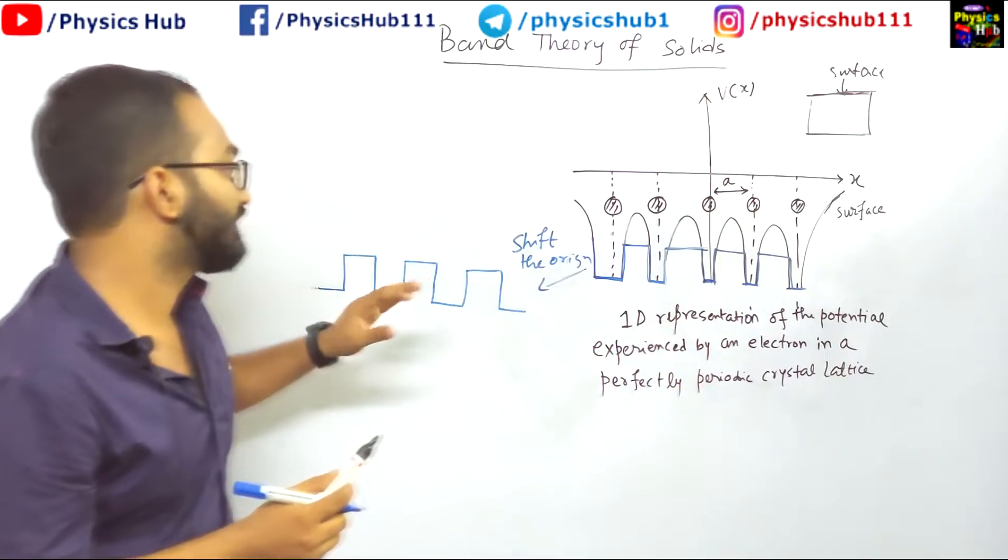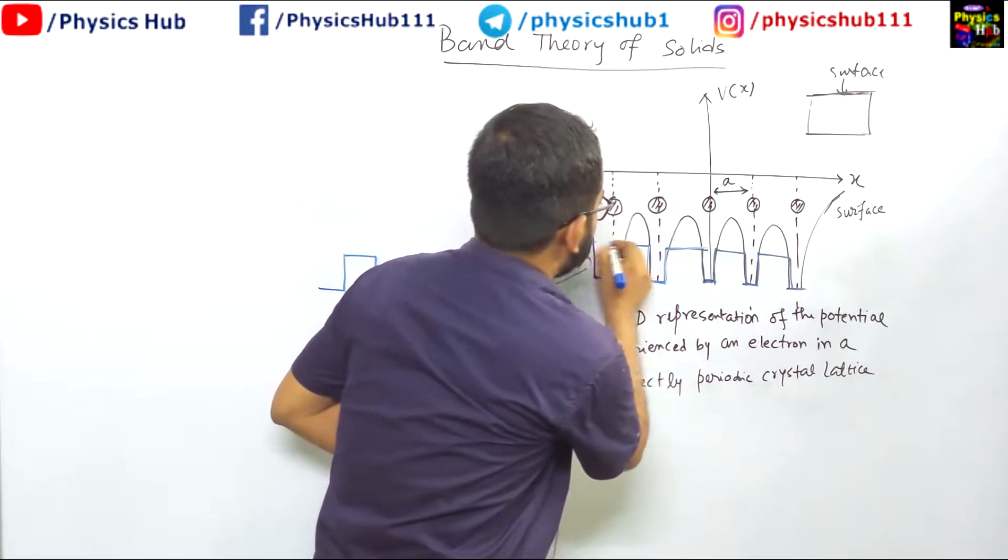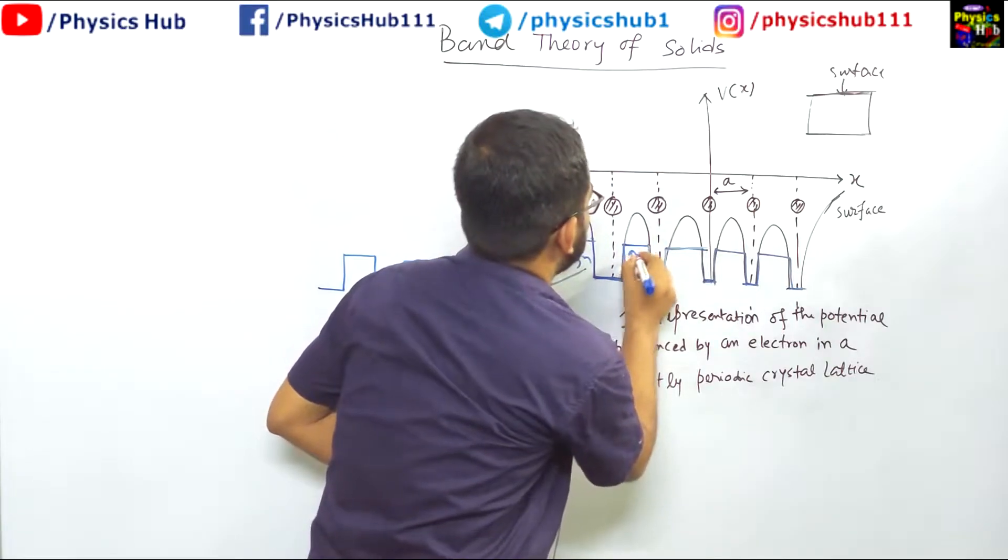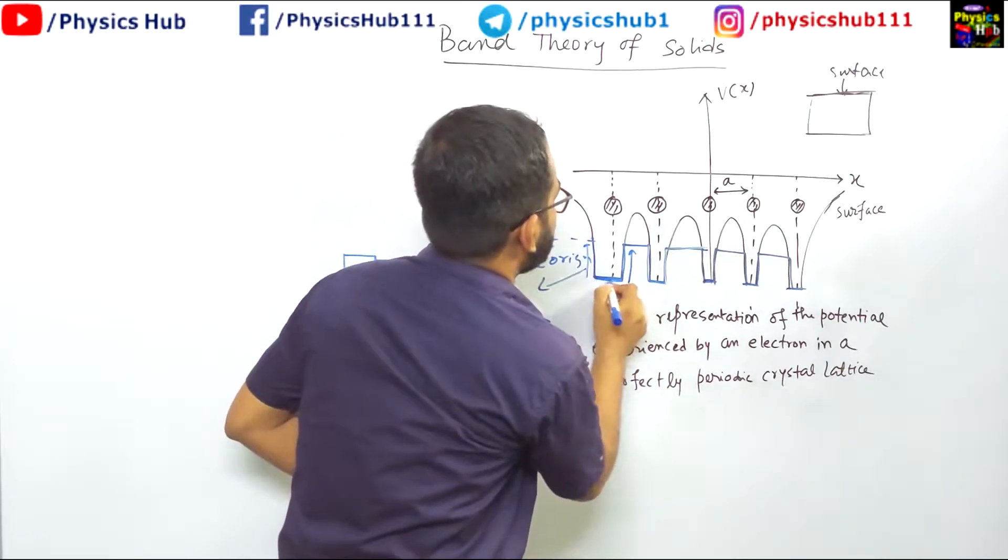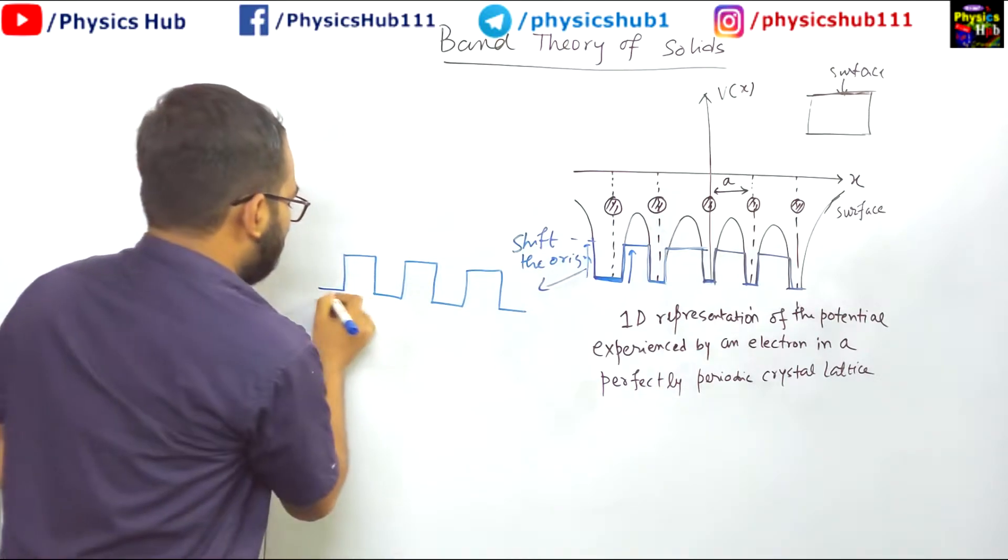And you know what? This design, we have just shifted the origin. This portion has come to this side and you got this one. This is a square well potential.